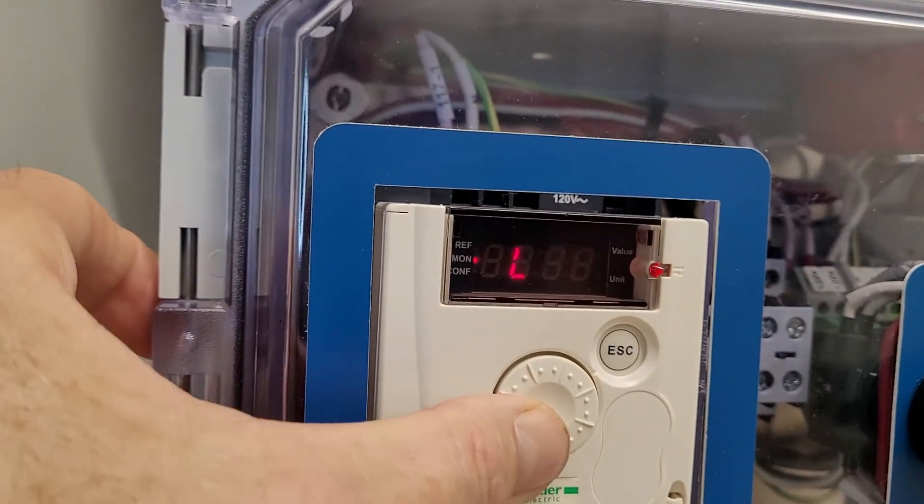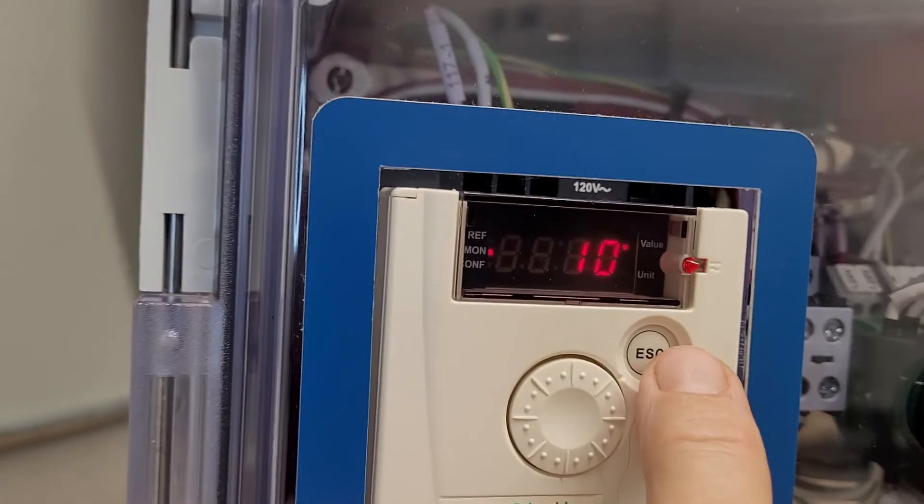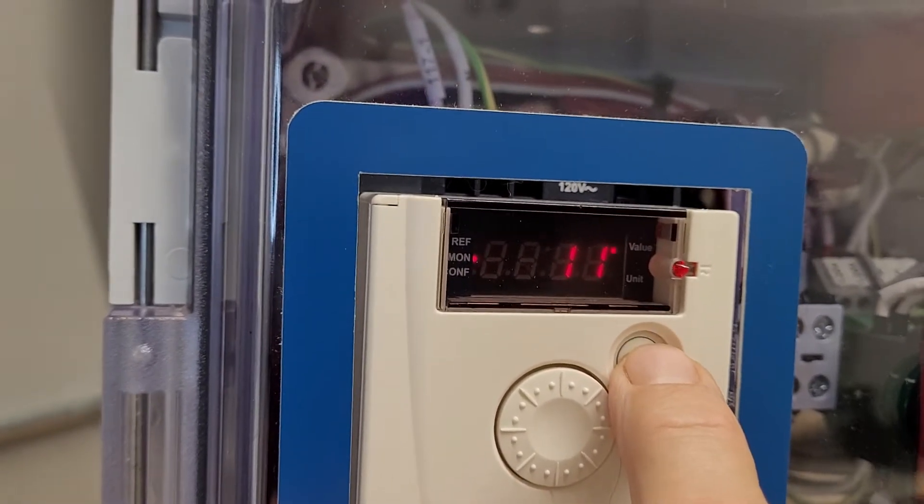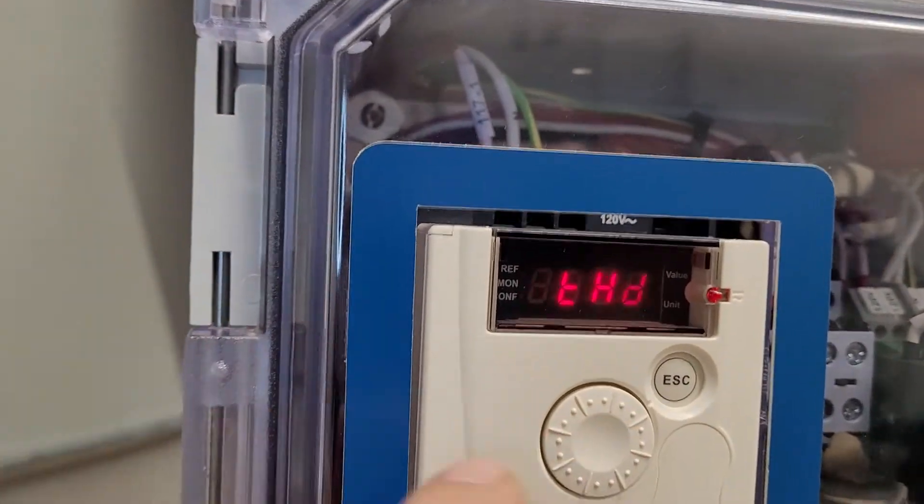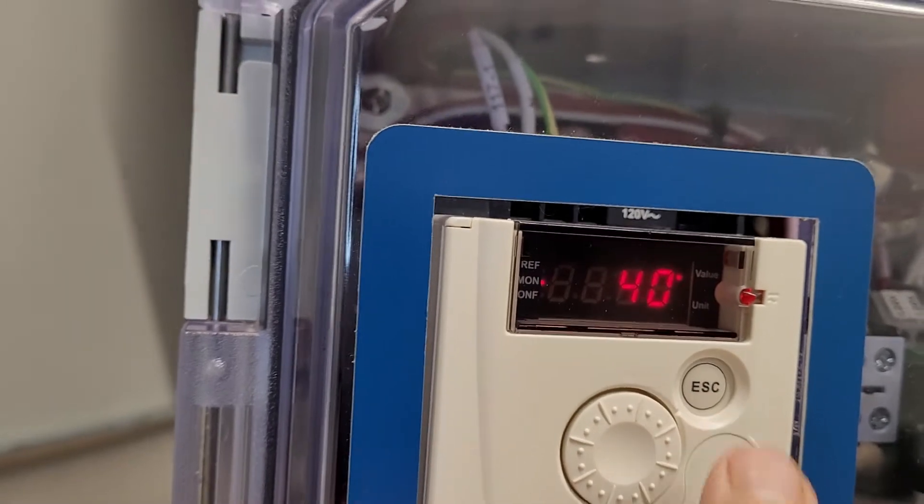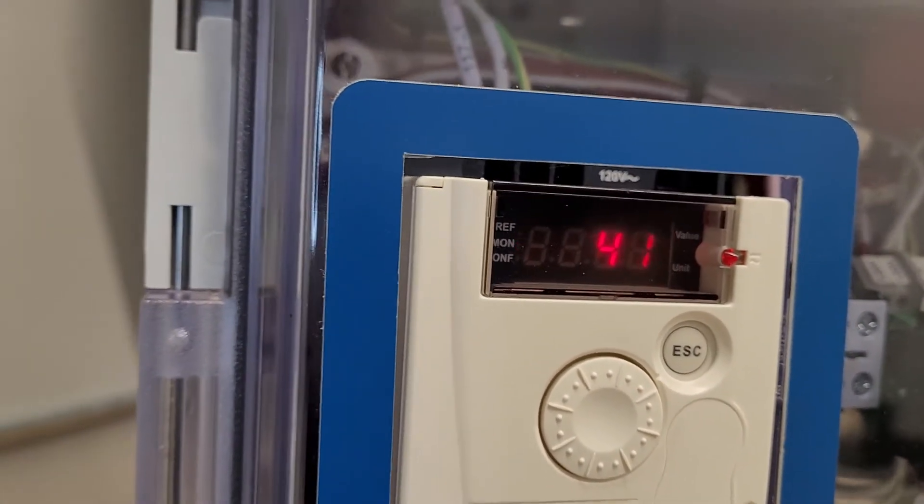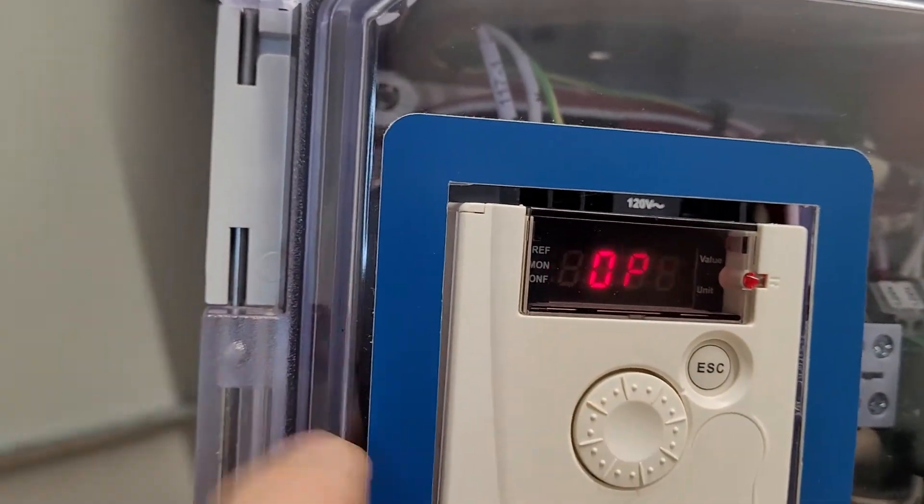I just exited out by mistake there. Now we are in THR. That is the thermal state of the motor. It is only at 10% so it is doing really well. You will see it creep up. And then the next one down is the thermal state of the drive. It is operating at about 40% of its maximum temperature. I will hit ESC and go down to the next one.